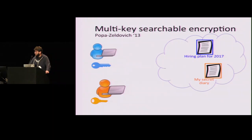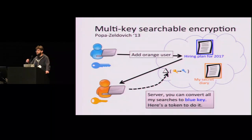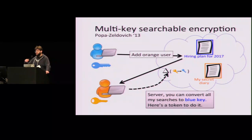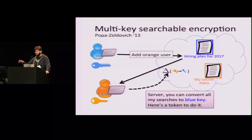In 2013, Popa and Zeldovich introduced a primitive called multi-key searchable encryption, which neatly solves this problem. Rather than requiring the orange user to generate different search trapdoors for every document shared, the blue user can tell the server to add the orange user to a document. The orange user generates a bit of cryptographic information — given to the server — which delegates to the server the ability to convert its search tokens to searches under the blue key. The advantage is you can issue just one search token and the server does these search token conversions for you.